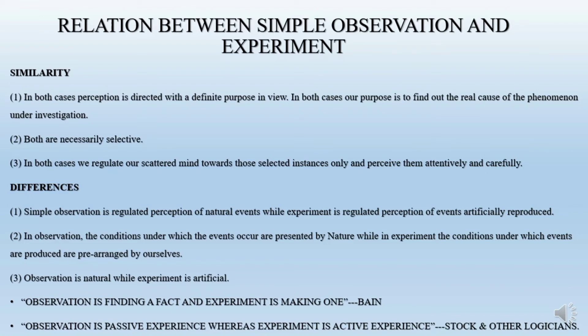Now the differences. Simple observation is a regulated perception of natural events, while experiment is a regulated perception of artificially reproduced events. In simple observation, the conditions under which events occur are presented by nature, while in experiment the conditions are prearranged by ourselves. Simple observation is natural, while experiment is artificial.